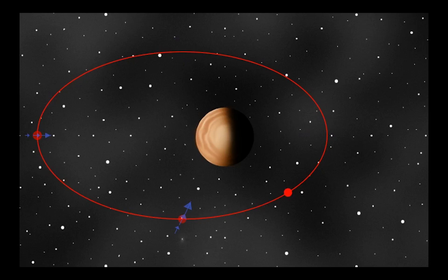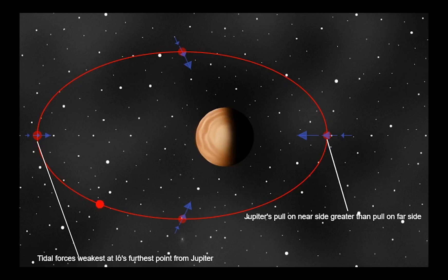We can see Io in an exaggerated elliptical orbit around Jupiter. The gravitational pull of Jupiter, greater on the near side of Io and lesser on the far side, is shown for four locations in the orbit. Note that the differential pull, the difference in the pull of gravity, is greater when Io is close to Jupiter.